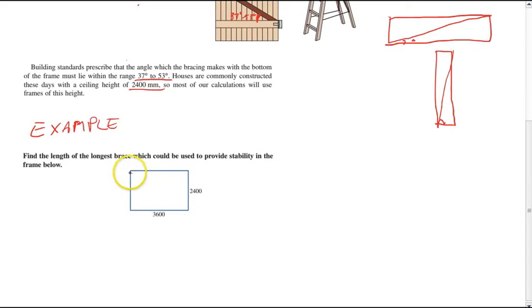Here's a basic wall. It's 3600 millimeters wide and 2400 millimeters tall. We want to find the length of the longest brace that can be used. Now, the length of the longest diagonal in this rectangle would be from here to here. So our first step here is to find out what that angle would be.